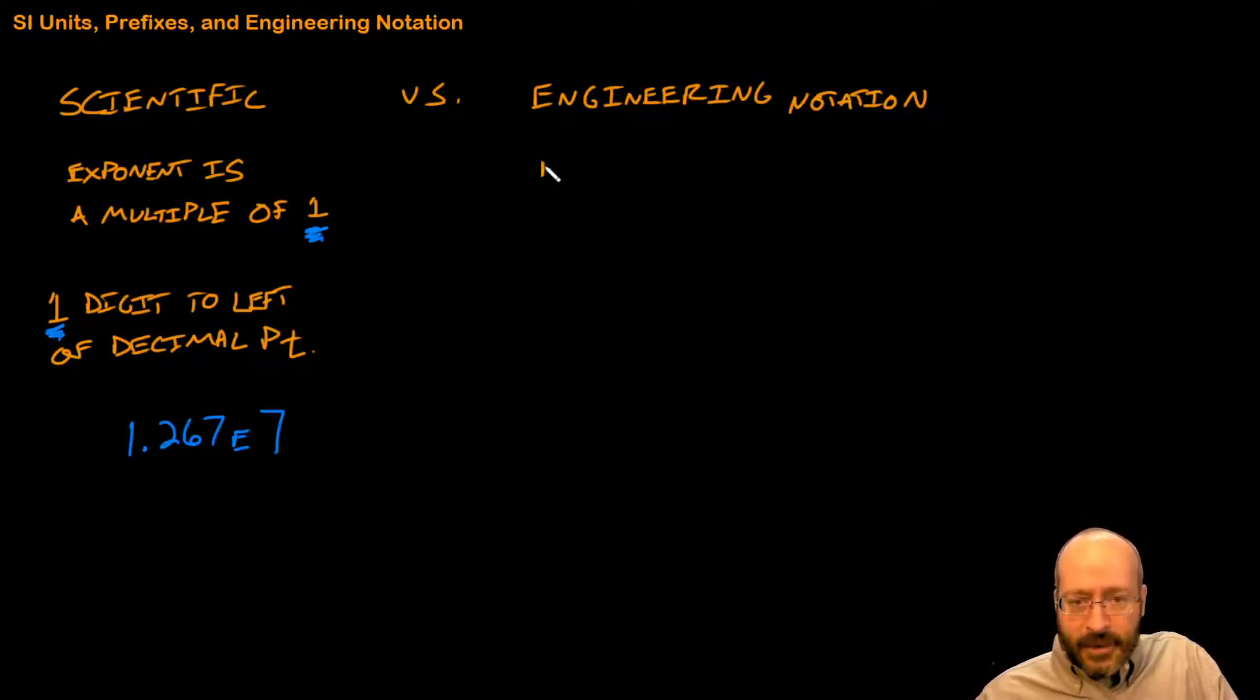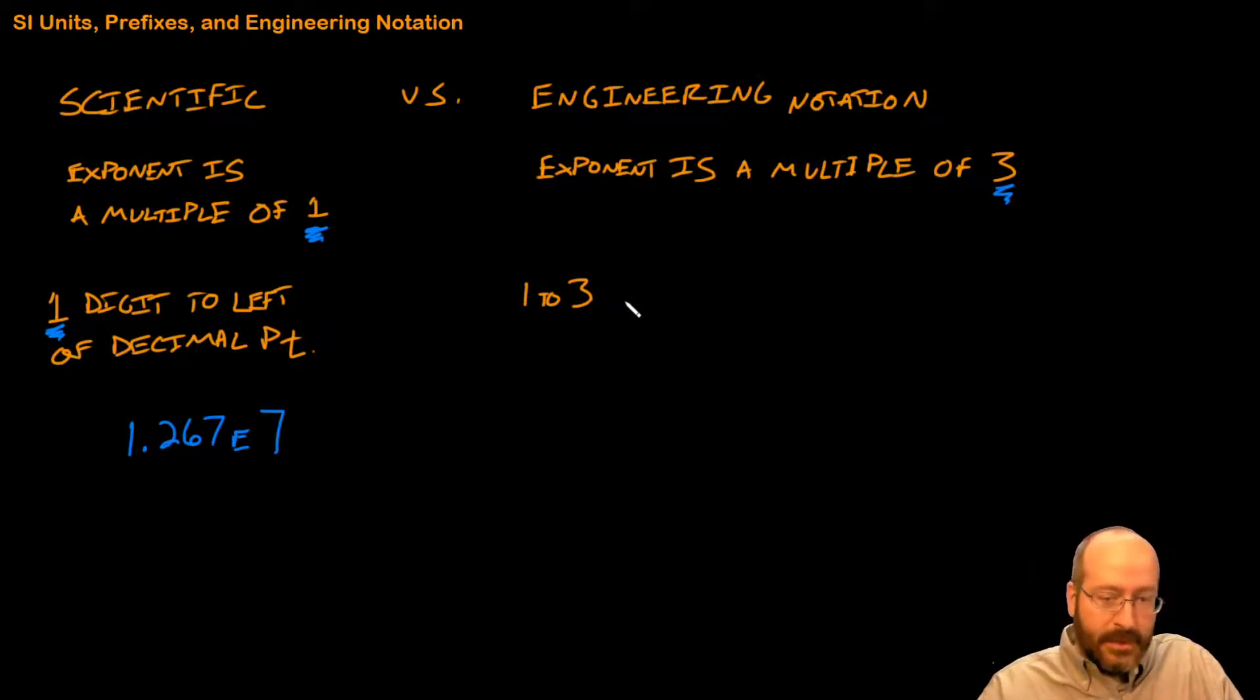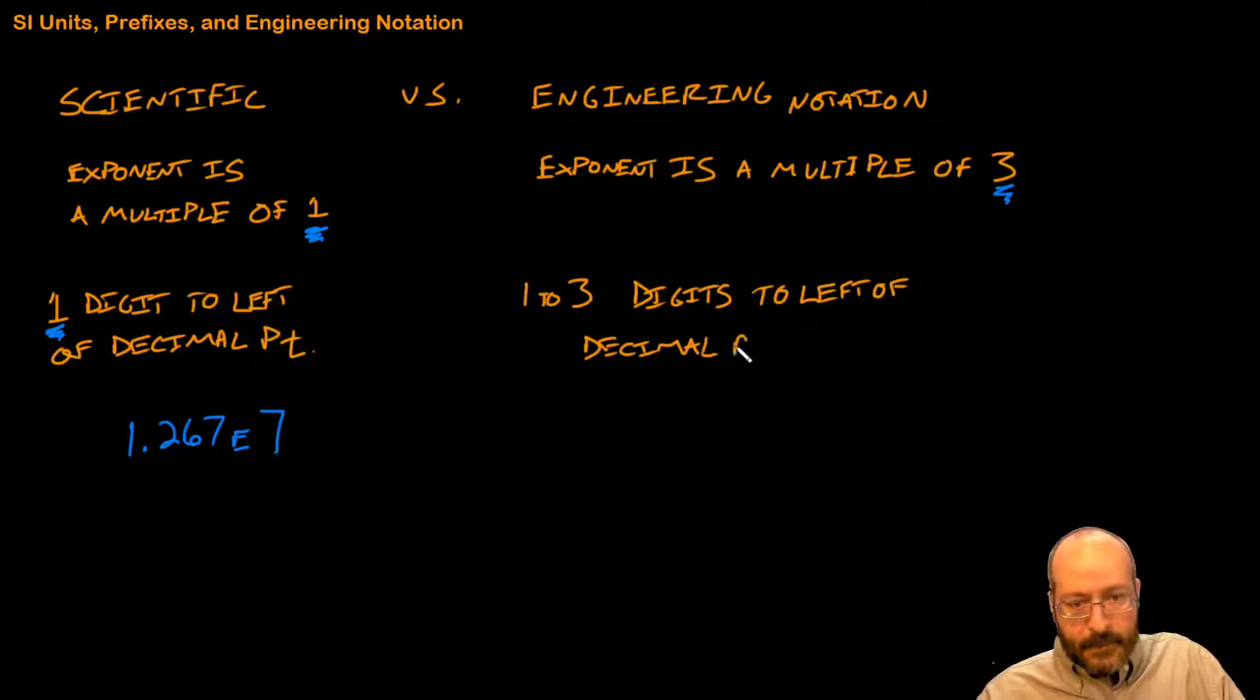In engineering notation, it's going to look similar with a couple subtle differences. Exponent is a multiple of 3. And there's a reason we pick 3. And we have 1 to 3 digits to the left of the decimal point.